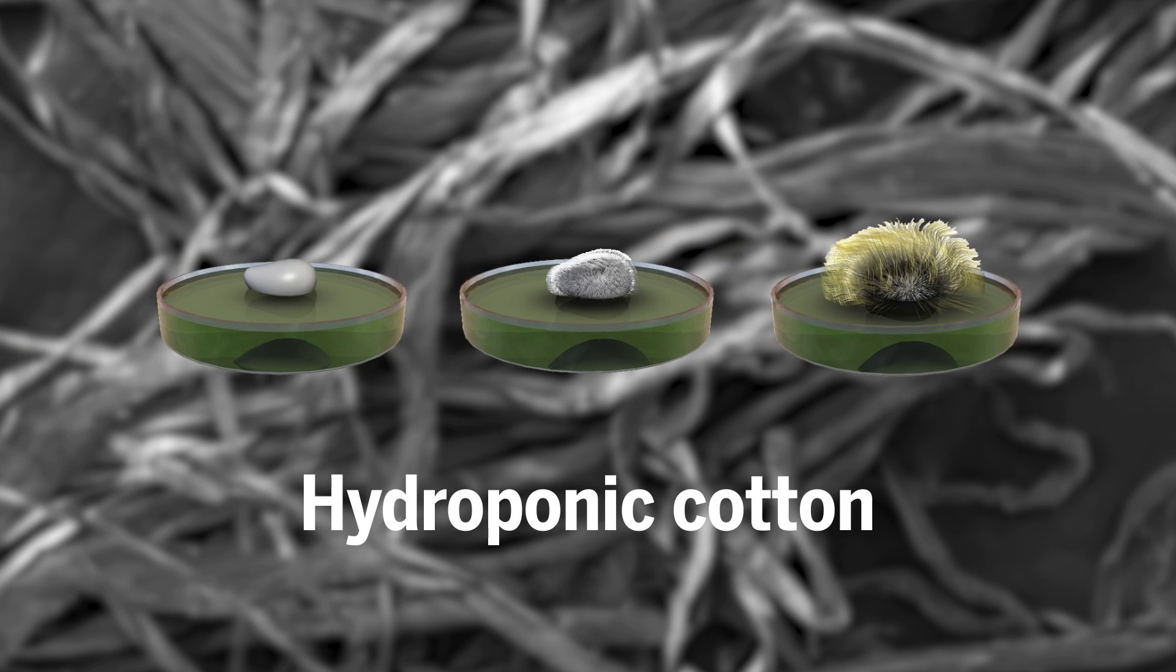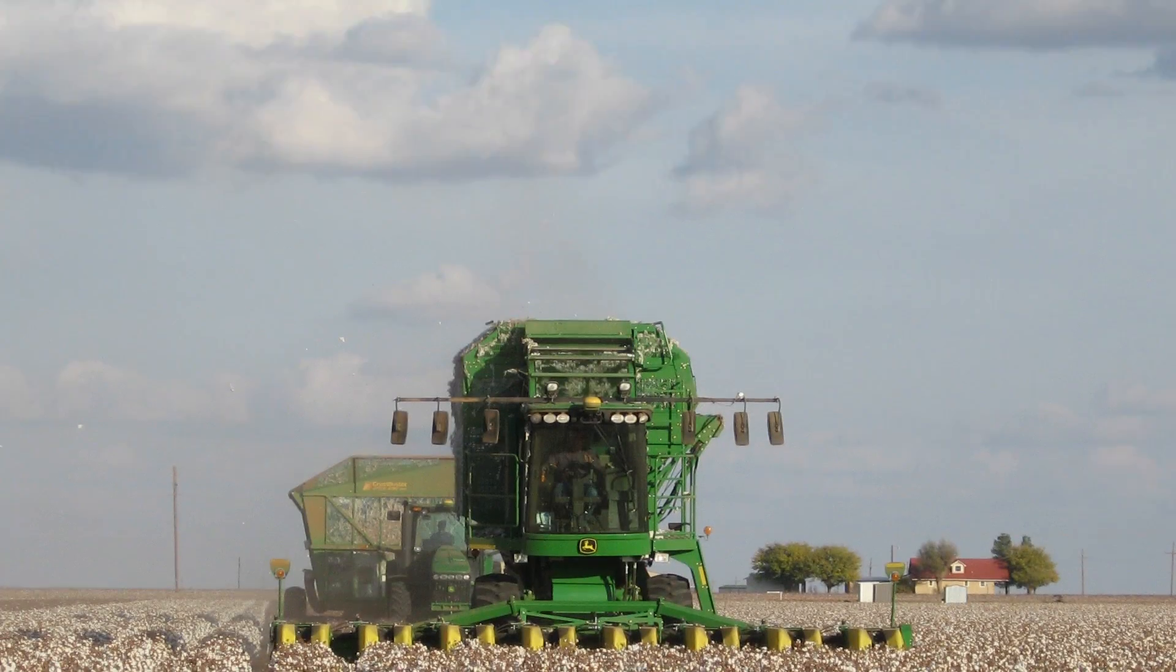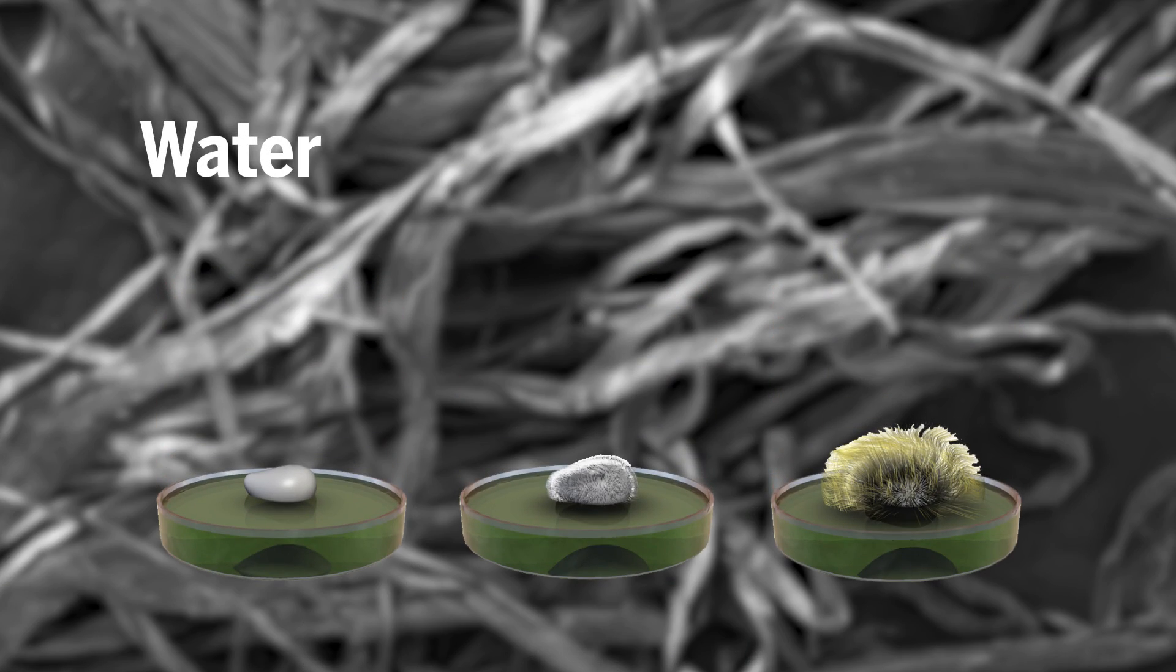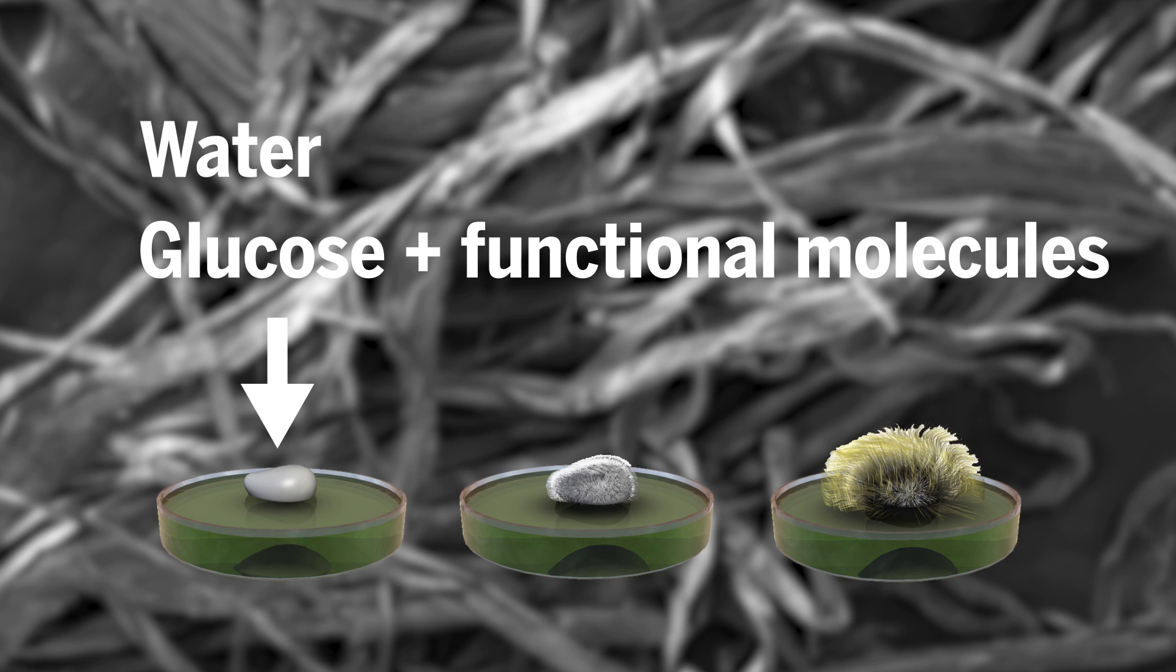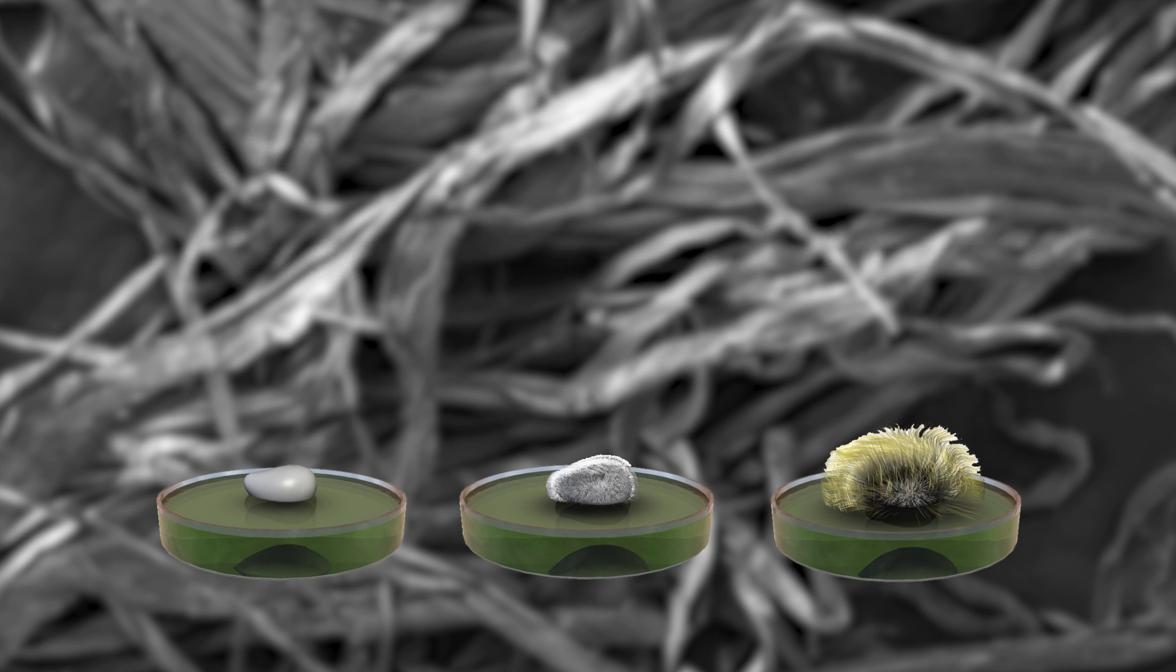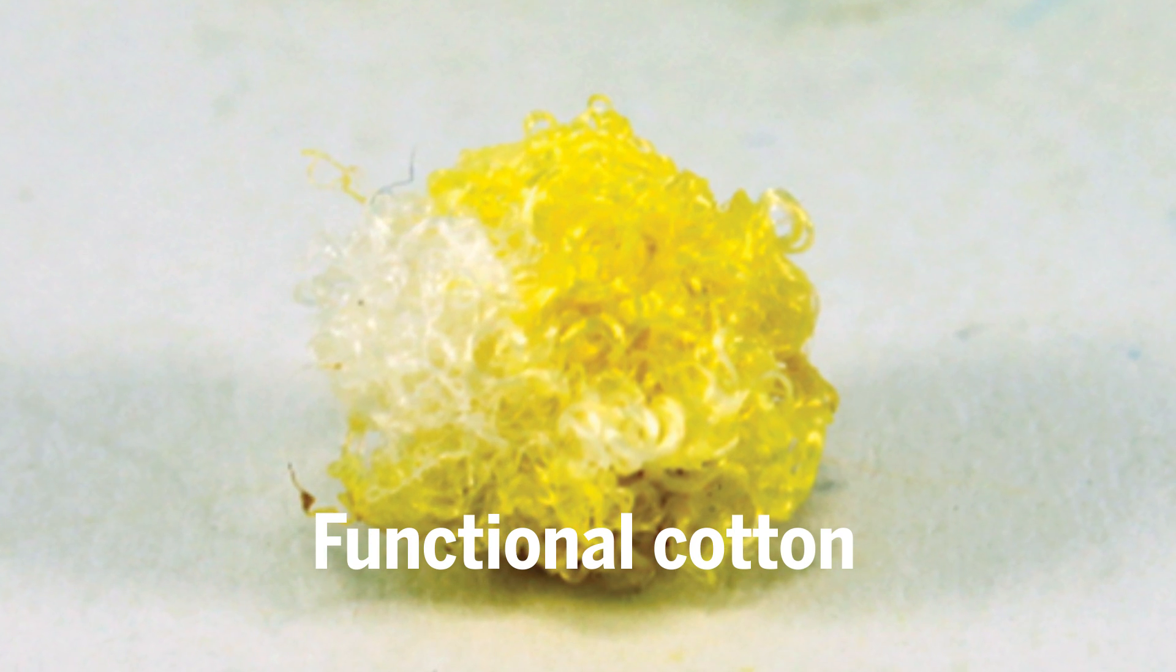They started with hydroponically grown cotton plants that grow in dishes rather than a field. They fed the plants water spiked with glucose molecules linked to other functional molecules, which were then absorbed by the plants and passed to the fiber-forming cells, where they were used to build the plants' cotton fibers.